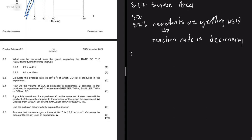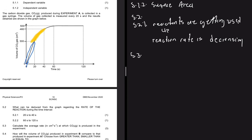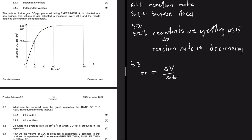Question 5.3 asks us to calculate the average rate in cm³ per second at which CO₂ is produced. For CO₂, we are given the volume, so the reaction rate equals the change in volume divided by the change in time. For the average, we must consider the entire time interval, so we use: rate = (V_final − V_initial) / (t_final − t_initial).